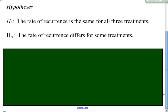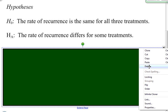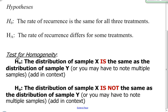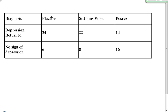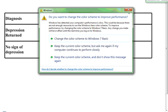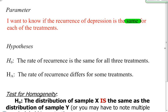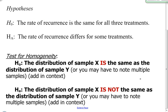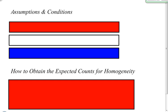For a test for homogeneity, the null hypothesis will almost always look something like: the distribution of one sample is the same as the distribution of another sample. The alternative states that the distribution of sample X is not the same as the distribution of sample Y. Here we have a sample from placebo, a sample from St. John's Wort, and a sample from POSREX, so just about every null and alternative hypothesis will follow this type of pattern.